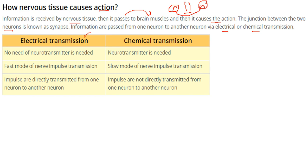In electrical transmission, no neurotransmitter is needed, and it is a fast mode of nerve impulse transmission. Chemical transmission requires a neurotransmitter and is a slower mode of nerve impulse transmission. In electrical transmission, impulses are directly transmitted from one neuron to another. In chemical transmission, it is not direct — the impulse has to go through some medium.